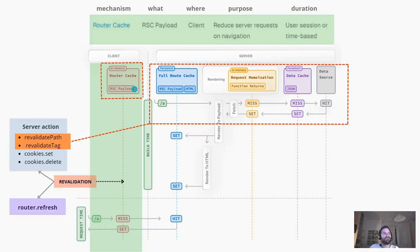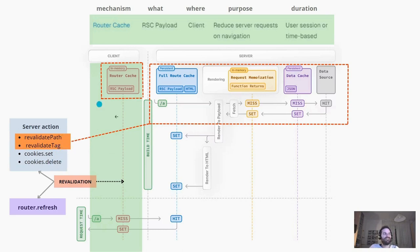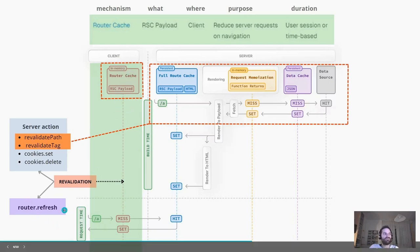How can we revalidate the router cache? We have many different methods. There is router refresh, which I think is the best suitable for most cases — I personally always use router refresh. We also have revalidate path, the cookies set, and cookies delete. The revalidate path and tag revalidate the cache, but they revalidate everything — it's a method that triggers a complete revalidation also on the server. So if you only need to revalidate the client cache, use router refresh.